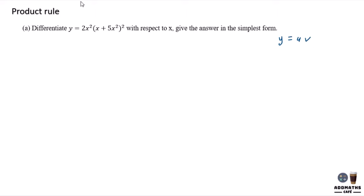So to differentiate this, I will have dy/dx equal u prime times v plus v prime times u. So what I do with this is to make this as u and behind as v.